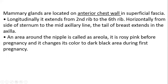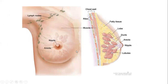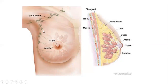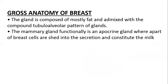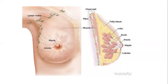Mammary glands are located on the anterior chest wall, present vertically from the second rib to the sixth rib, and horizontally from the side of the sternum to the axillary region. Around the nipple is a darkened area called the areola. The tail of the mammary gland extends into the axilla. The gland is made up of fat mixed with a tubuloalveolar pattern of tissues, with lobes, lobules, and ducts opening to the outer surface through the nipple.